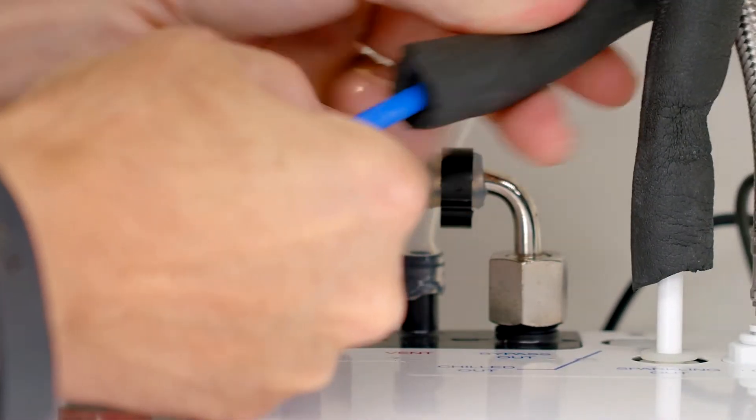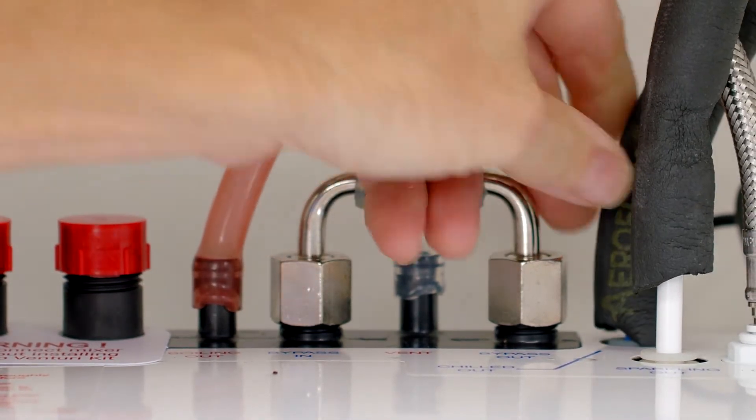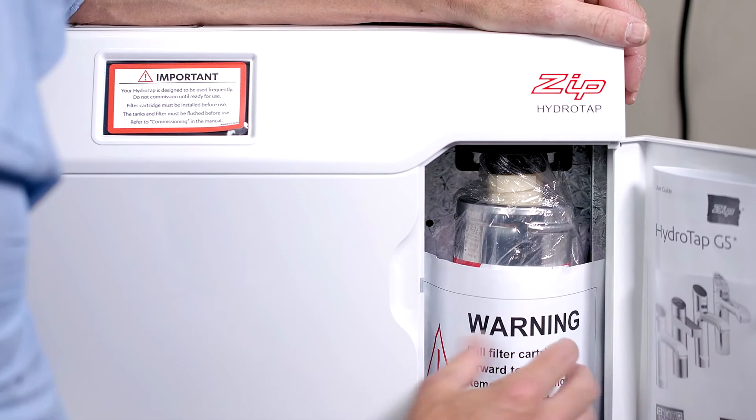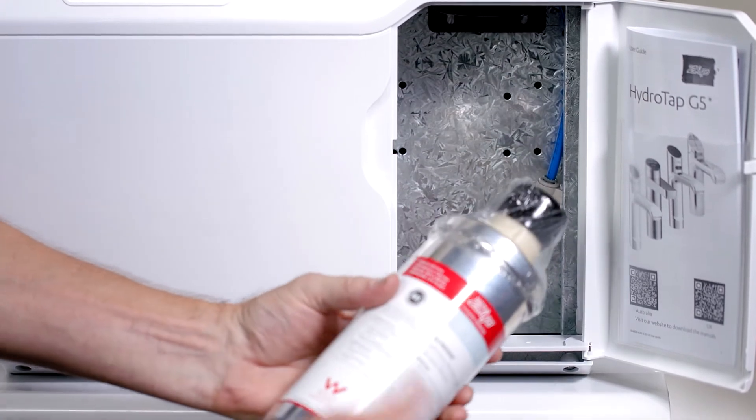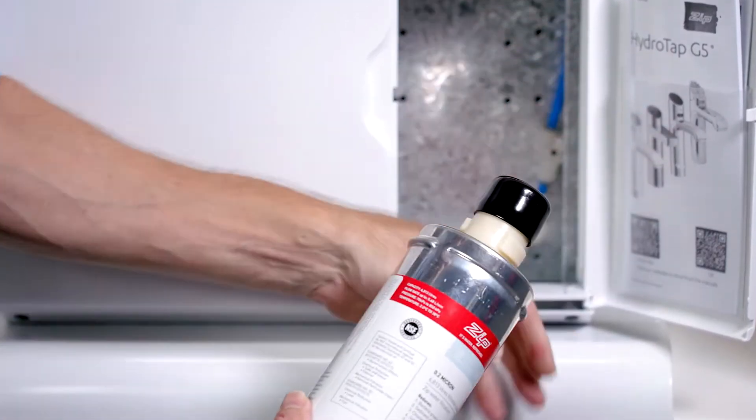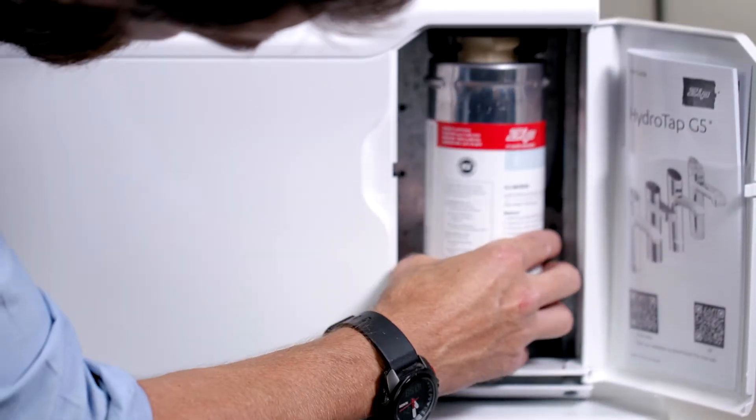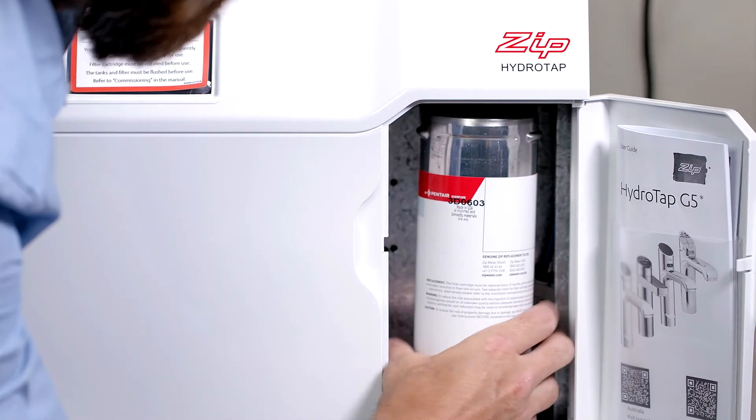Your HydraTap is designed to be used frequently so only commission the HydraTap if you're planning on using it straight away. The filter for the HydraTap comes loose in the filter compartment. Open the filter door, remove the plastic wrapping from the filter and fit the filter into the filter head. Locate the filter, push it up and turn it clockwise. The filter will stop turning when it's in place.